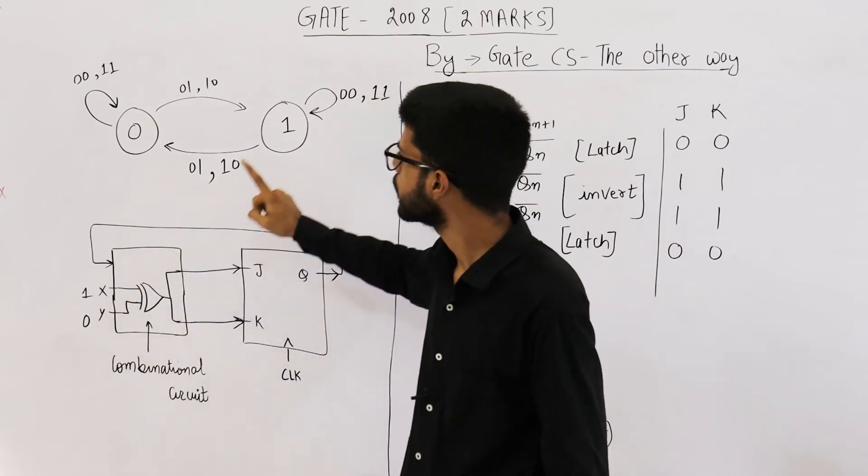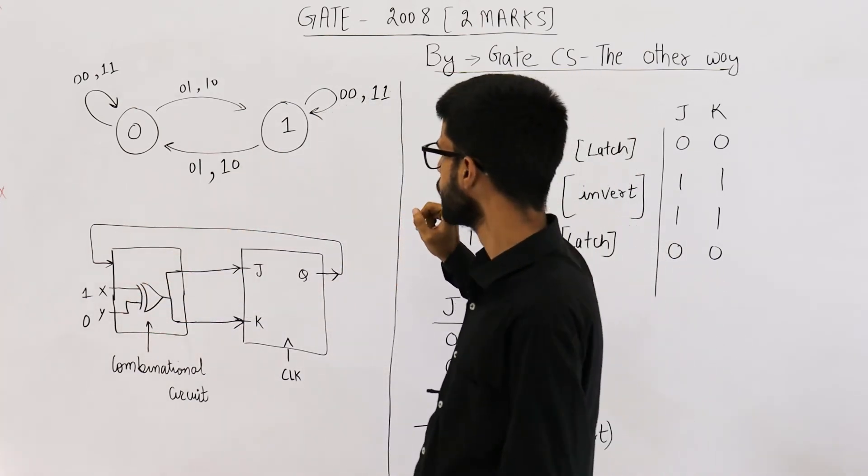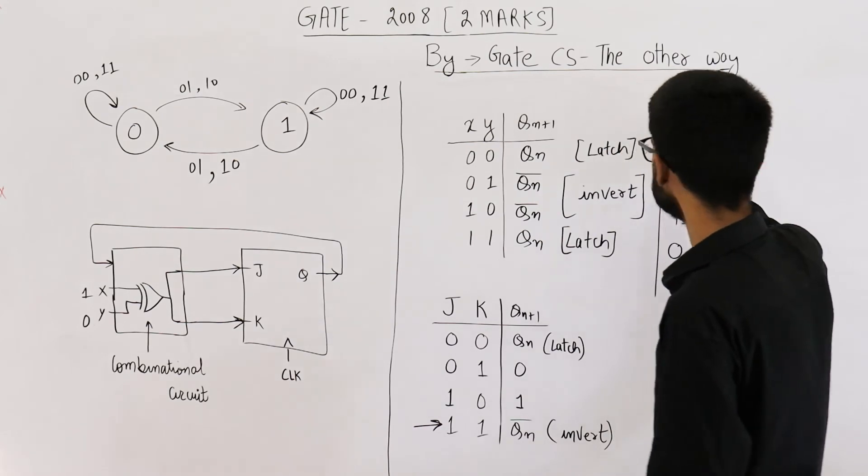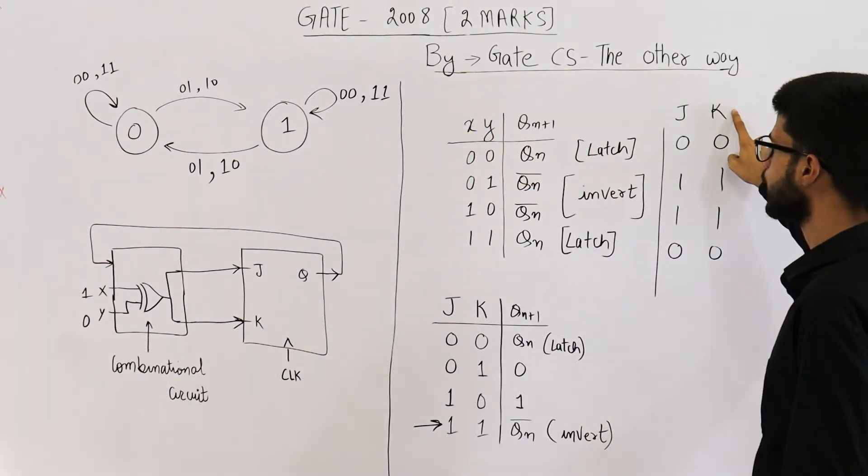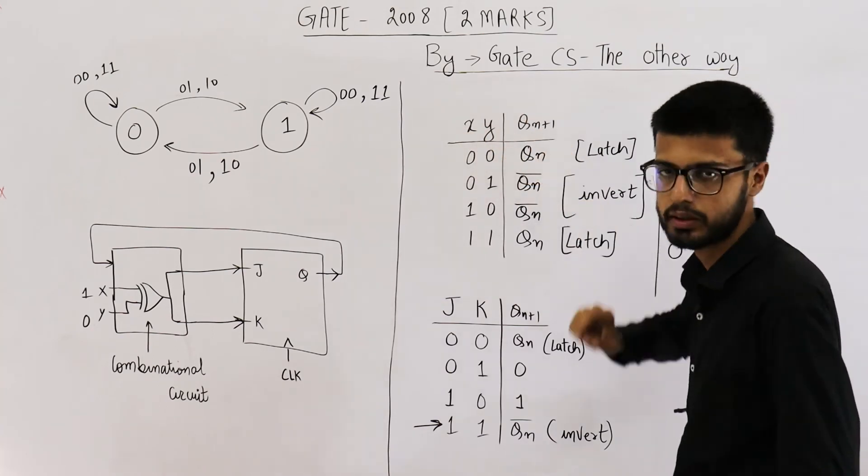This entire circuit now has two inputs X and Y. This will work as desired. So your answer is J is X XOR Y as well as K is also X XOR Y.